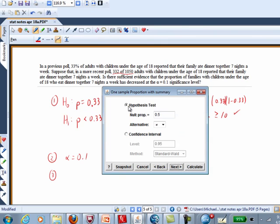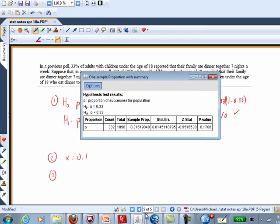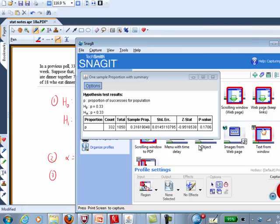We're doing a hypothesis test. What's the statement in the null? 0.33. And the direction in the alternative is less than. Click Calculate. And there are our results.